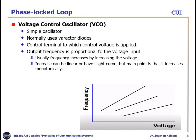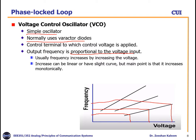The voltage control oscillator is a simple oscillator — normally varactor diodes are used to create it. A control terminal receives a control voltage, and the output frequency is proportional to the voltage input. For a given voltage it generates a corresponding frequency; higher voltage generates higher frequency. The frequency increases by increasing the voltage — this increase can be linear or with a slight curve, but the main point is that it increases monotonically.